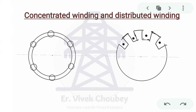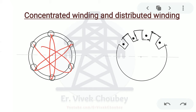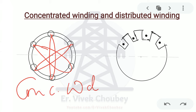Let's start with concentrated and distributed winding. When we think about a three-phase rotating machine, normally what comes to mind is that each of the three phases starts from one side and ends at the next side — the first phase, the second phase, and the third phase. One side of the winding is under one pole and the other side is under the next pole. This kind of winding is called concentrated winding, because the winding is concentrated between two slots.